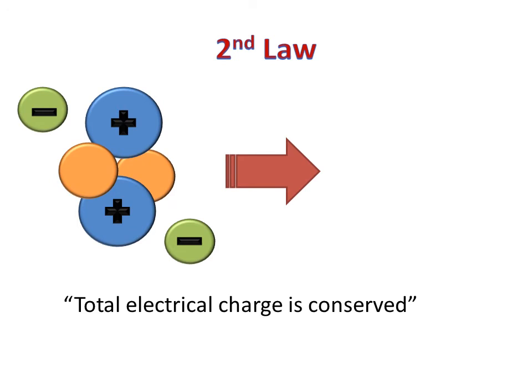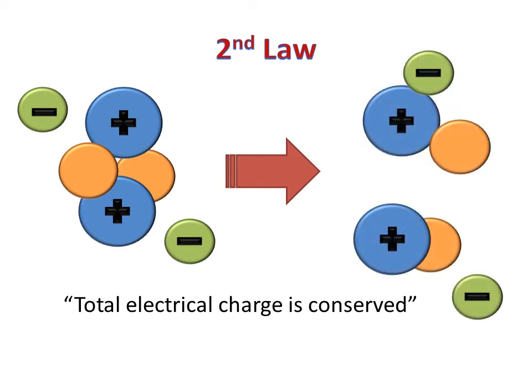The second law states, the total electric charge is conserved. This means that if the electric charge is zero, meaning the total number of protons and electrons are the same before the reaction, then the electric charge will be zero after the reaction is complete.